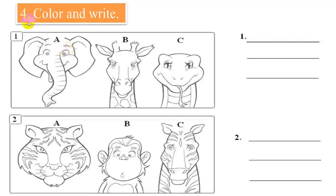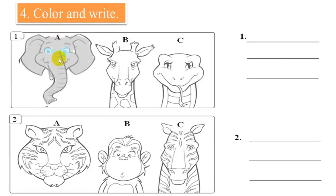Exercise 4: color and write. Now you color the elephant, then you write 'I like an elephant.' Ok?